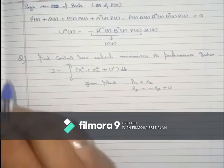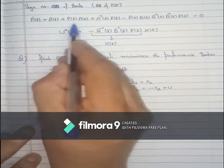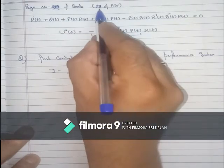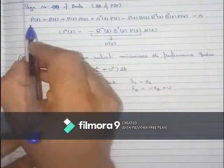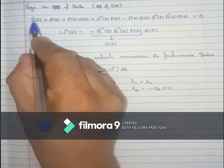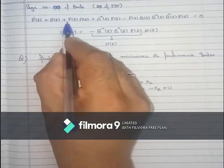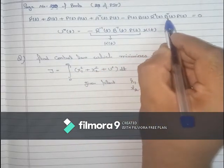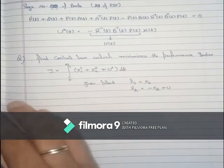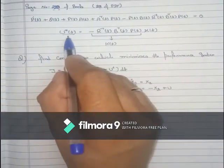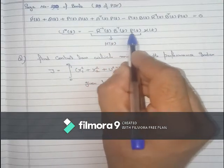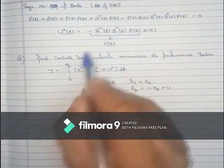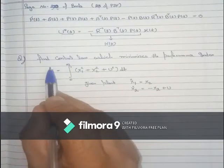Good morning students. This is the Riccati matrix equation, found in the book notes on page 220 of the book and page 28 of the PDF. This is the continuous Riccati matrix equation: P_dot(t) + Q(t) + P(t)A(t) + A_transpose(t)P(t) minus P(t)B(t)R_inverse B_transpose(t)P(t) equals zero. The optimal control output u_star(t) equals minus R_inverse B_transpose(t) P(t) X(t), and this factor is known as the Kalman gain, denoted K(t).